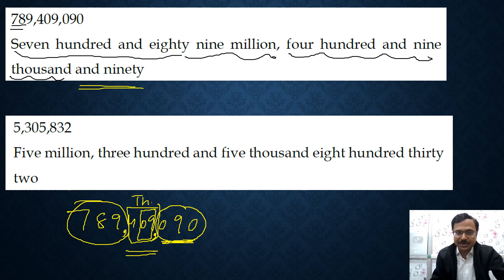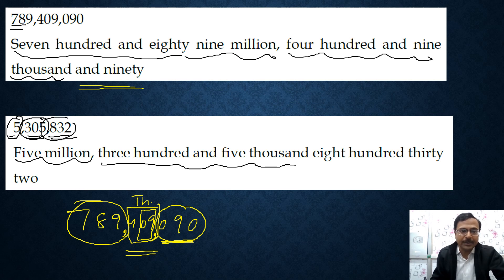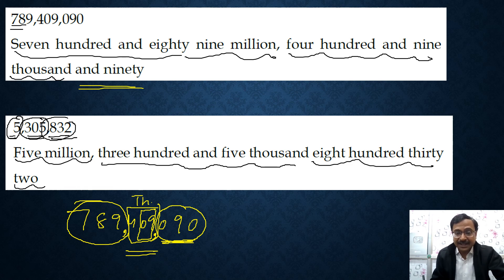Starting from the right-hand side we make triples: 090, 409, 789. The next three digits — 789 — form millions. So we write 789 millions. Note that 1 million equals 10 lakhs. For commas in the international system we always make triples from the right. In a second example with seven digits: three digits, three digits, and one digit remaining — so we have 5 millions, 305 thousands, and 832. In the international system you use thousands, millions, and billions — not lakhs.